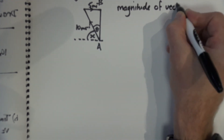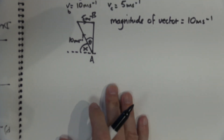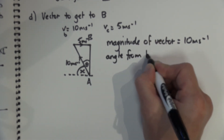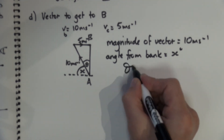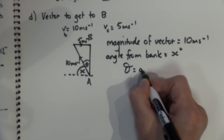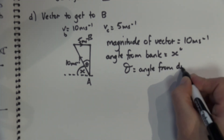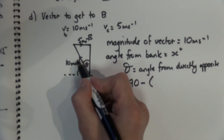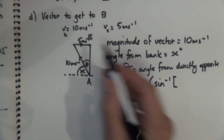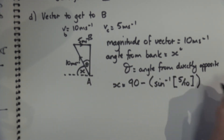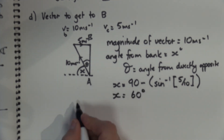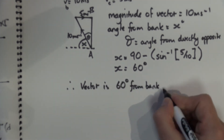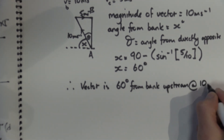The magnitude of my vector is 10 metres per second as stated in the question. I now need to find angle theta, which is the angle from the vertical or directly opposite the bank. Using sine because I have the opposite over the hypotenuse, that's sine of theta equals 5 over 10, which gives theta equals 30 degrees, so x equals 90 minus 30 equals 60 degrees. The vector the boat must take is 10 metres per second at 60 degrees from the bank, aimed upstream.